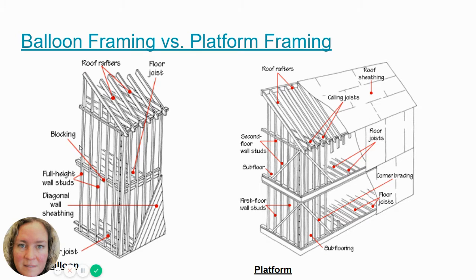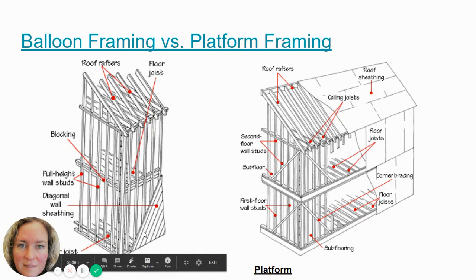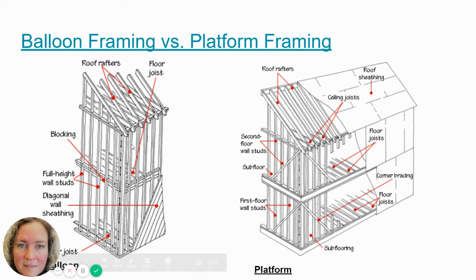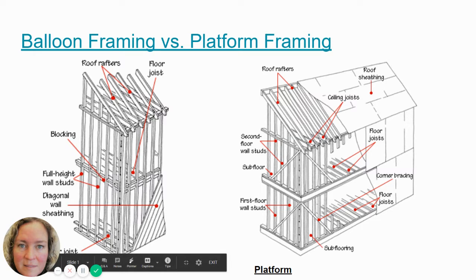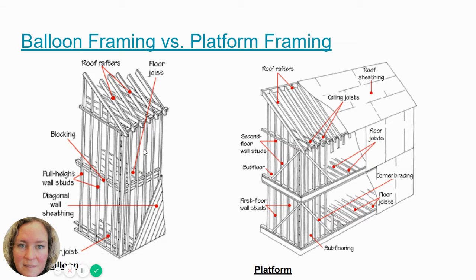Pretty much everything else is framed the same way — the spacing of the studs and how we frame the corners. This is an older method of sheathing, with diagonal strapping on the outside. With balloon framing, there does need to be some cross bracing, because of the length of the studs and how far they're spanning. They need to be cross braced to prevent racking.